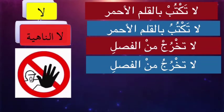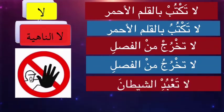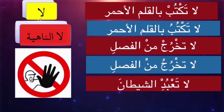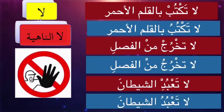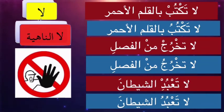Whenever you see a Fa'al Mudari' Marfu', we know that Lā is Lā Nāfiya and has no effect on the Fa'al. But if it has an effect — Majzoom — it's Lā Nāhiya. So here, with the knowledge we just learned: whenever a Fa'al Majzoom is followed by Al, to assimilate the sounds we bring in the sound of Kasra. So: 'Lā ta'budish-shaytan.' We say 'Lā ta'budu shaytan' means you're not worshiping Shaytan. But 'Lā ta'budish-shaytan' — that is a command — don't worship Shaytan. There is a lot of difference in how we pronounce the sound and how we understand.